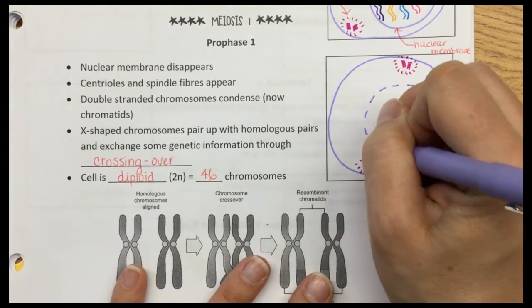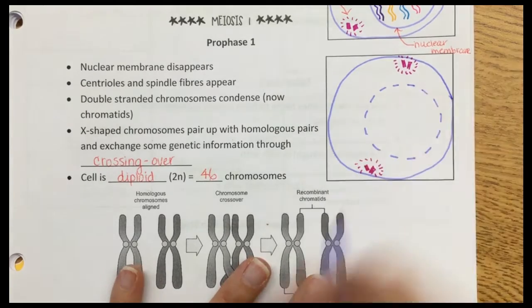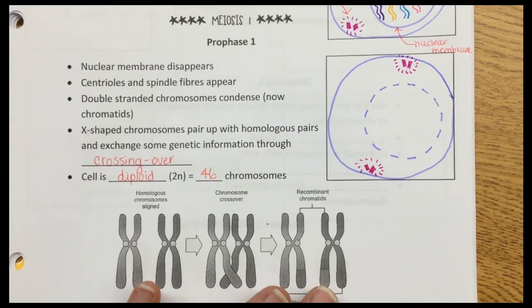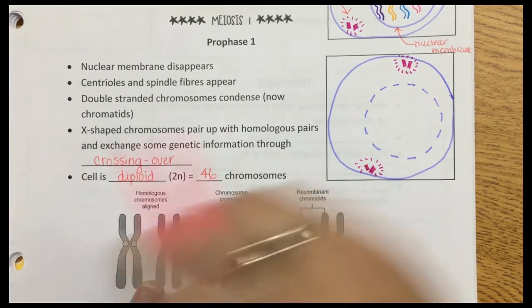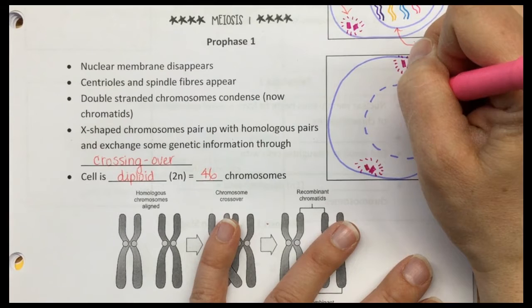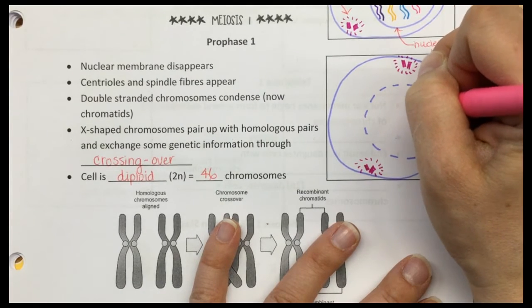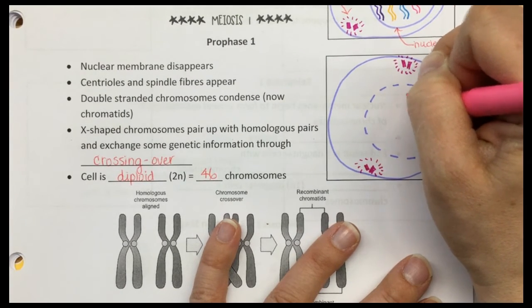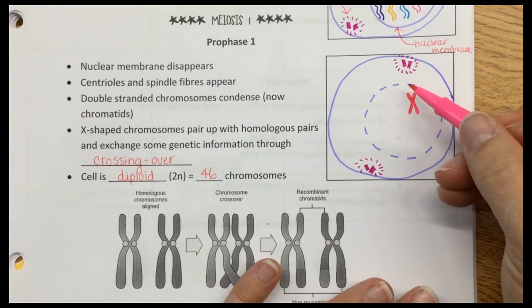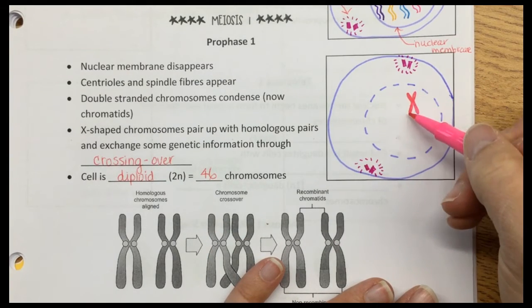Our nuclear membrane is starting to disappear, so we're going to draw it as a dotted line. Now our chromatin are condensing, and we're going to have my pink condensed chromatids.